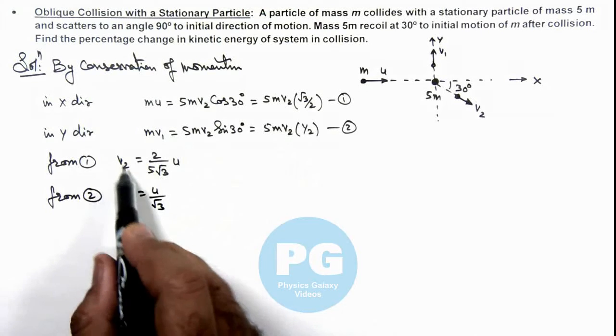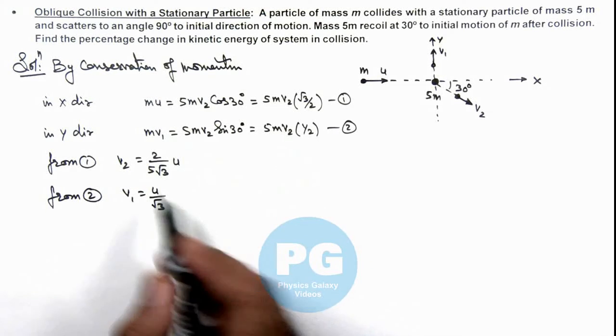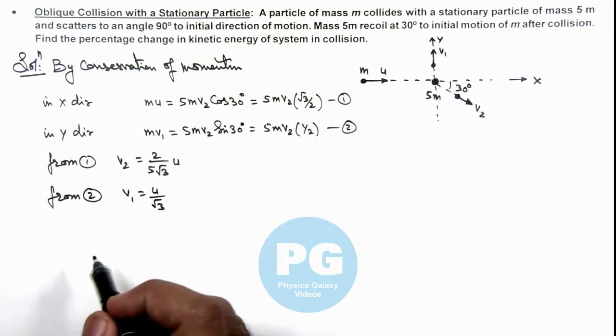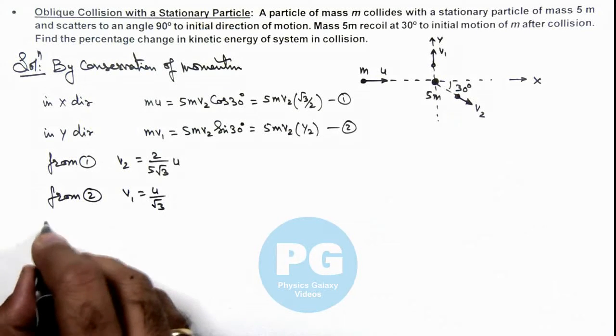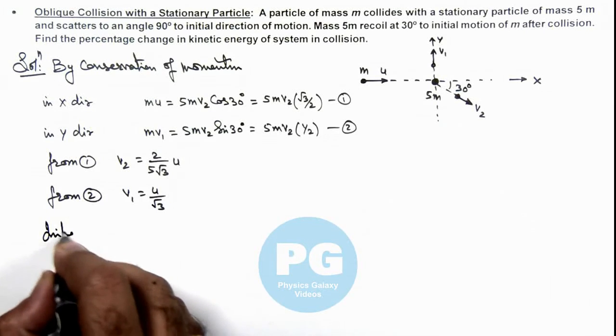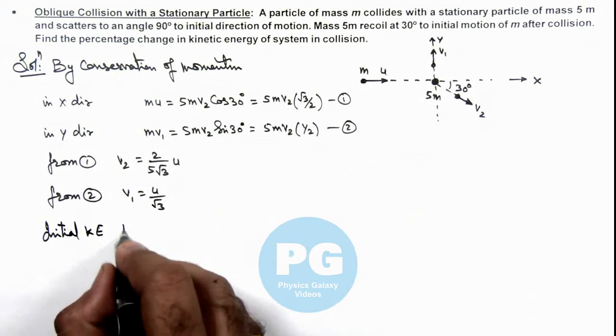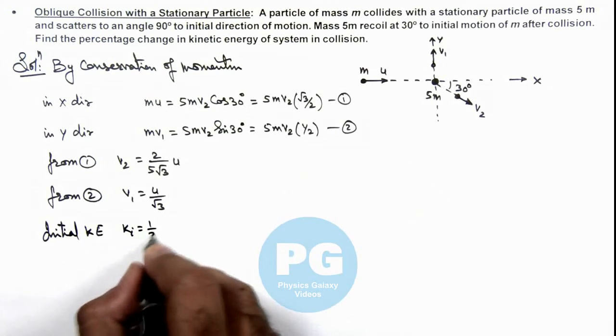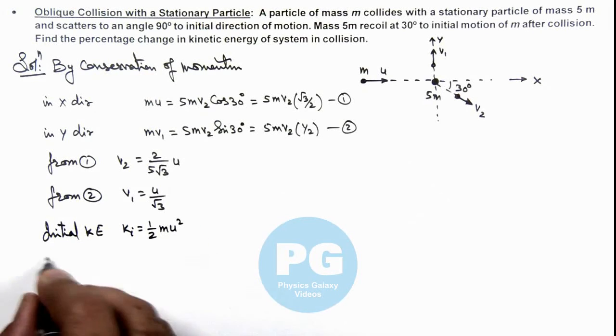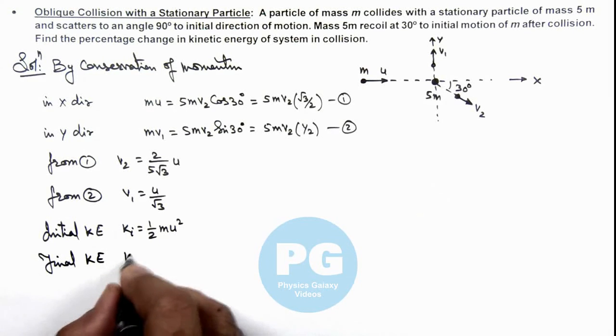As we have got the values of v2 and v1 we can directly calculate the final kinetic energy. So here first we can get the initial kinetic energy of the system which is KE_i, which is (1/2)m·u².